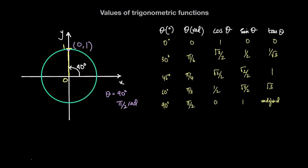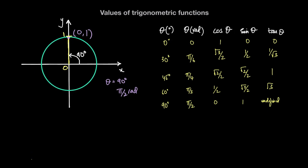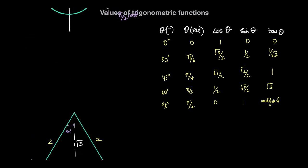So these are some of the common values of theta — in degrees and radians — and the associated values of the trigonometric functions for those angles. These are values that are very useful to remember and that you're expected to reproduce. An easier way to remember these values is to use the following triangles.